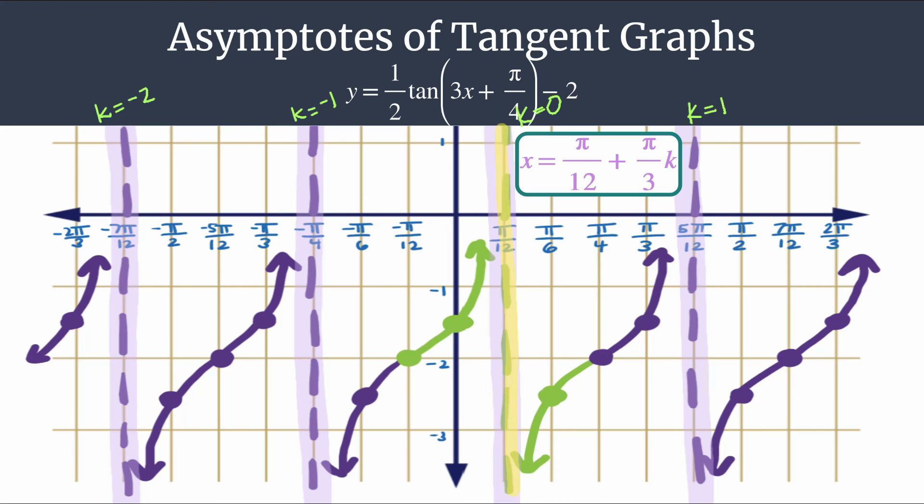It takes some getting used to, but you have the trick to find the asymptote generating equation. Hopefully now you feel really comfortable with how to use this equation as well. Thanks for watching. I hope this helps you feel more comfortable finding the vertical asymptotes of tangent graphs. Check out the video description for links to other examples.